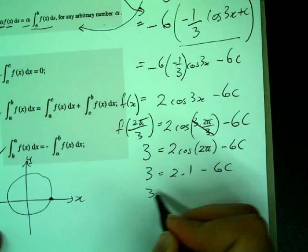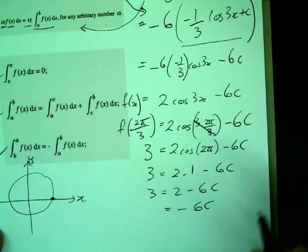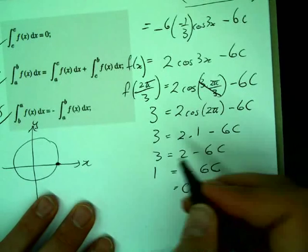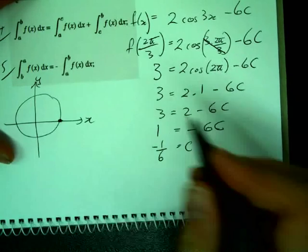Rearranging again. 3 equals 2 take 6c. Get negative 6c equals what? 1. So c equals negative 1 over 6.